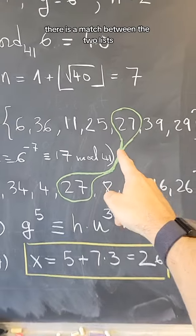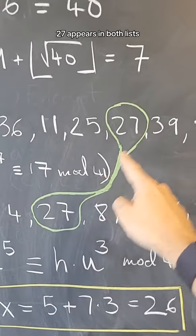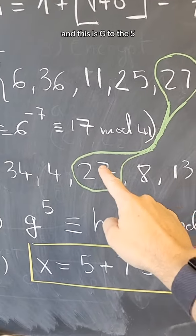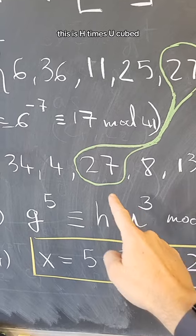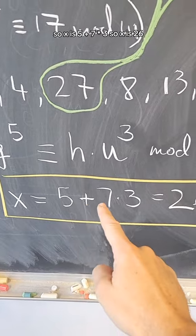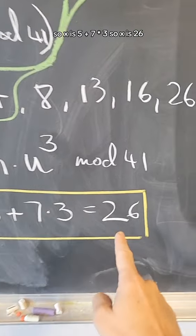We find a match between the two lists. 27 appears in both lists. This is g to the 5, and this is h times u cubed. That's the match: i equals 5 and j equals 3. Therefore, x is 5 plus 7 times 3, so x is 26.